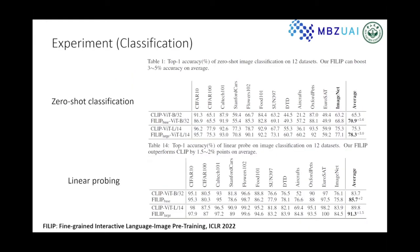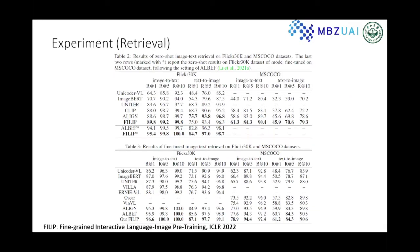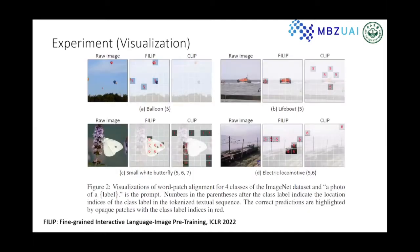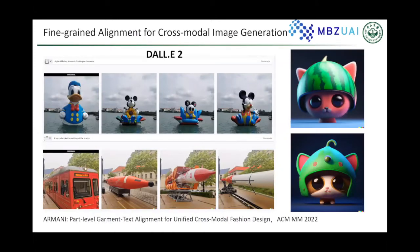We evaluate FILIP on 12 different adaptation datasets. FILIP performs much better than CLIP on both zero-shot and linear probing settings. On retrieval tasks, FILIP also outperforms CLIP, ALIGN, and other models. From the visualization results, FILIP can accurately align image patches with their corresponding word tokens.